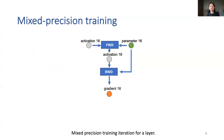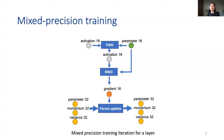Before digging into the details of the offload strategy in Zero Offload, let's take the data flow graph of mixed precision training as an example and see how tensors are used in deep learning training. Mixed precision training offers significant computational speedup by performing operations in half-precision format. This graph shows the data flow of mixed precision training, where circular nodes represent model states and triangle nodes represent computation. In each training step, an FP16 copy of parameters is used in forward and backward paths. To match the accuracy of FP32 networks, an FP32 copy of parameters and optimizer states such as momentum and variance are maintained and updated with gradients during parameter update. At the end of each training step, FP16 parameters are updated based on FP32 parameters.